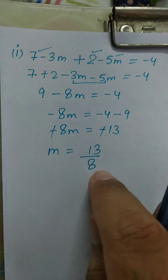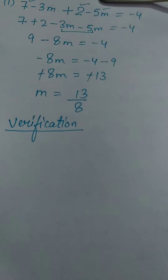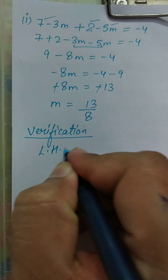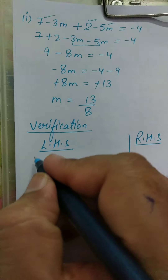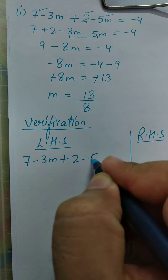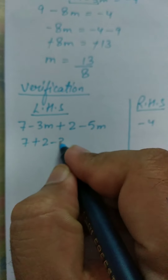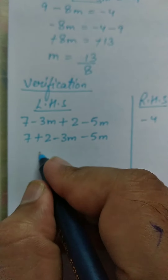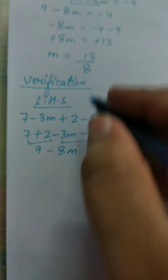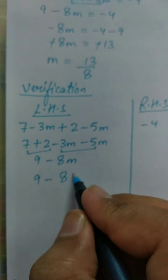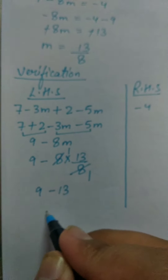Now you have to verify that your answer is correct. For this, do verification. Make two columns — one for LHS and one for RHS. In LHS, you have 7 minus 3M plus 2 minus 5M. In RHS, you have minus 4. First, solve LHS: 7 plus 2 minus 3M minus 5M — 7 plus 2 is 9, minus 3 and minus 5 is minus 8M. Now put the value of M: 9 minus 8 multiplied by 13 upon 8. 8 and 8 cancel, so 9 minus 13 is equal to minus 4.